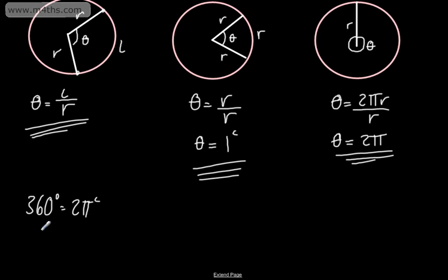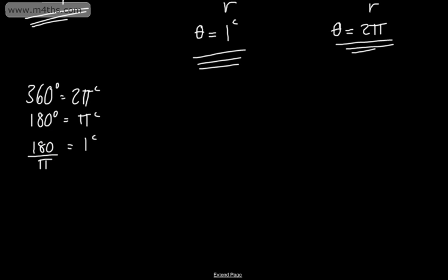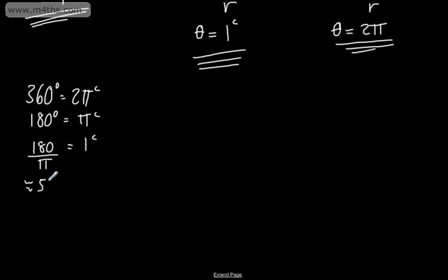From this, we can see that 180 degrees is going to be equal to π radians. So 360 is 2π radians and 180 is π radians. If we consider π is approximately 3.14, we can look at 1 radian: 1 radian is 180 divided by π, which gives us approximately 57.3 degrees. So 1 radian is approximately 57.3 degrees.